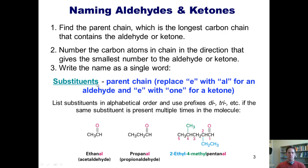Substituents always go first, then they are followed by the parent chain, in which we've replaced the E in the typical alkane name with the suffix AL for an aldehyde, or with the suffix ON for a ketone. We then list the substituents in alphabetical order using the prefixes di, tri, etc., if the same substituent is present multiple times in the molecule.